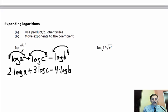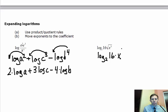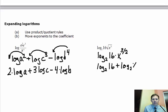This next problem is more complex: log base 2 of 16 times the square root of x cubed. The 16 is being multiplied by the square root. The square root can be rewritten as a fraction exponent, so this becomes x to the three-halves power. Now we have a multiplication problem that turns into addition: log base 2 of 16 plus log base 2 of x to the three-halves. Log base 2 of 16 equals 4, and the exponent moves out front: 4 plus three-halves times log base 2 of x.